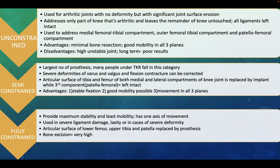Semi-constrained is the largest number of prostheses — most TKR patients fall into this category. Severe deformities of varus, valgus, and flexion contracture can be corrected. The articular surfaces of the tibia and femur of both the medial and lateral compartments are replaced by an implant, while the patellofemoral component is left intact. Advantages: stable fixation, good mobility, and movement in all three planes.